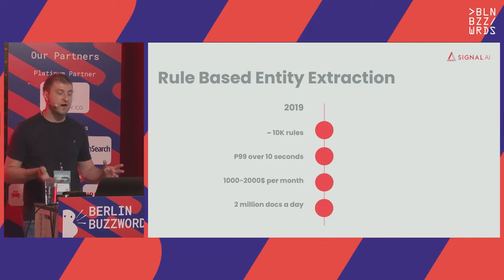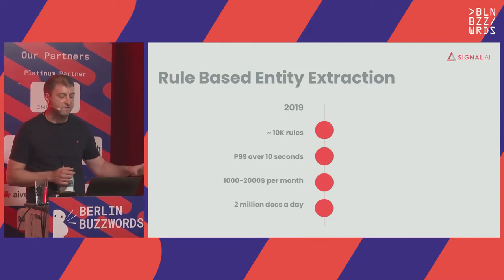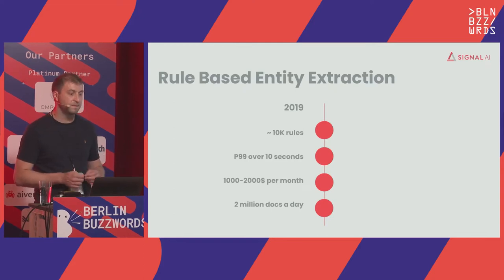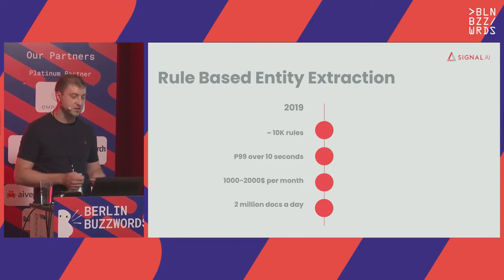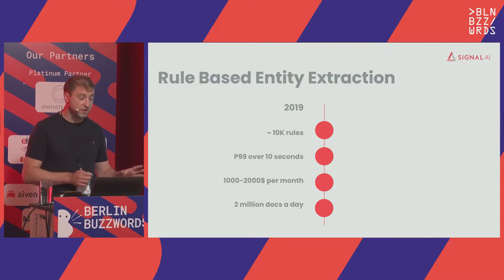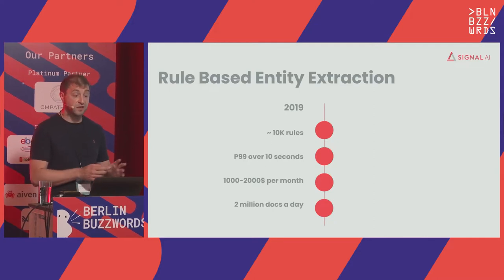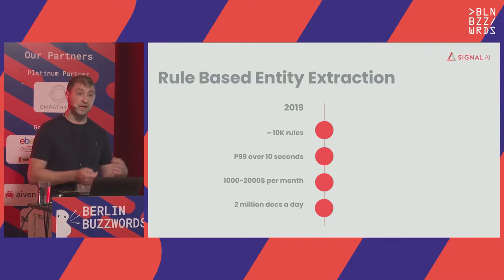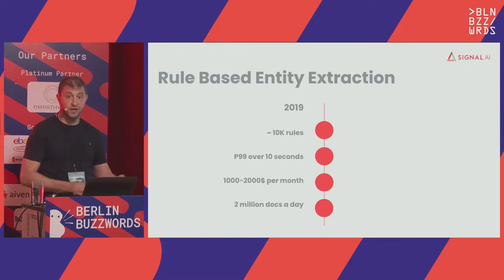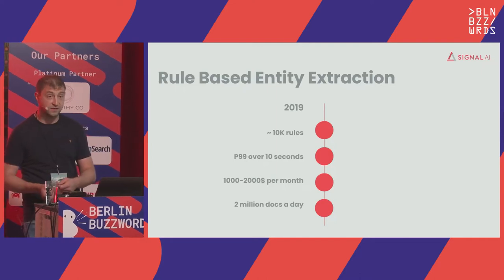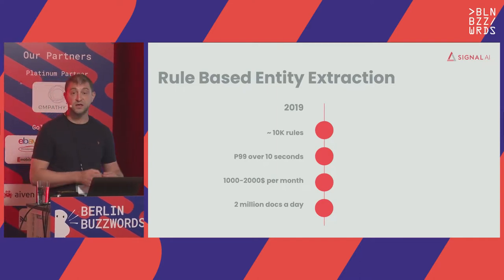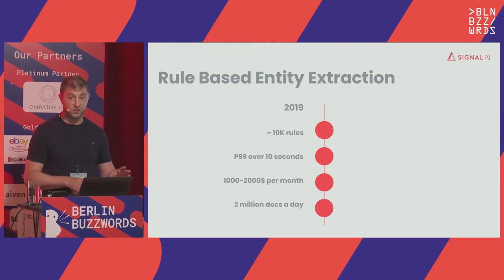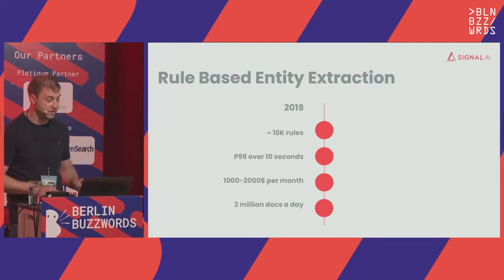To summarize: back in 2019, our entity rule service was running about 10,000 rules and the P99 was around 10 seconds. We were ingesting about 2 million documents a day. In order to cope with the load, we had to scale vertically, adding more CPU, and scale horizontally, adding more replicas. That caused an increase in cost — just for that service, we were spending about $2,000 per month.